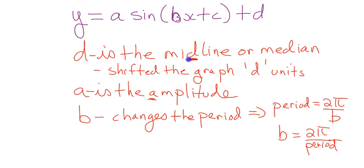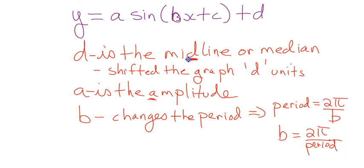When do we use each form? If you know the B value from an equation, you calculate the period using Period = 2π/B. If you're given a graph and can figure out the period, you calculate B using B = 2π/Period. So it works both ways. The period is 2π/B — increasing B makes the period shorter and tighter. With B=7, the period is 2π/7. With B=0.5, the period is 4π.